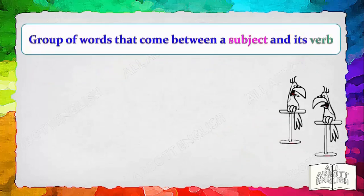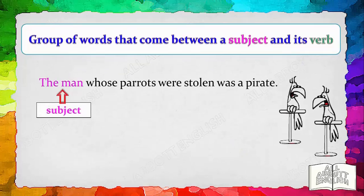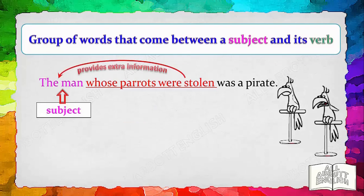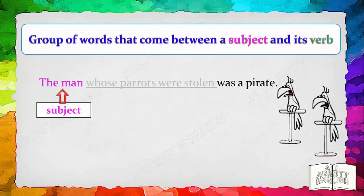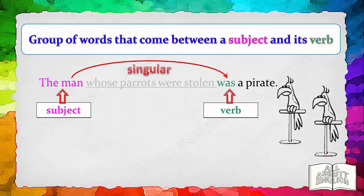Let's look at another example. 'The man, whose parrots were stolen, was a pirate.' 'The man' is the subject. 'Whose parrots were stolen' is a group of words that provides extra information about the man. By mentally removing this group of extra words, it is easier to match the subject with its verb. 'The man' is a singular subject; therefore, it takes the singular verb 'was.'